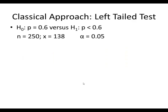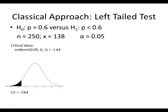For our first example, we're looking at a left-tailed test — this is a proportion problem. For the classical approach, we first find our critical value. With proportions, we always use inverse norm to find our critical value. Inverse norm takes area to the left; your area is alpha. This is a standard normal distribution, so our mean is zero and our standard deviation is one. So our critical value is negative 1.64 on this left-tailed test.